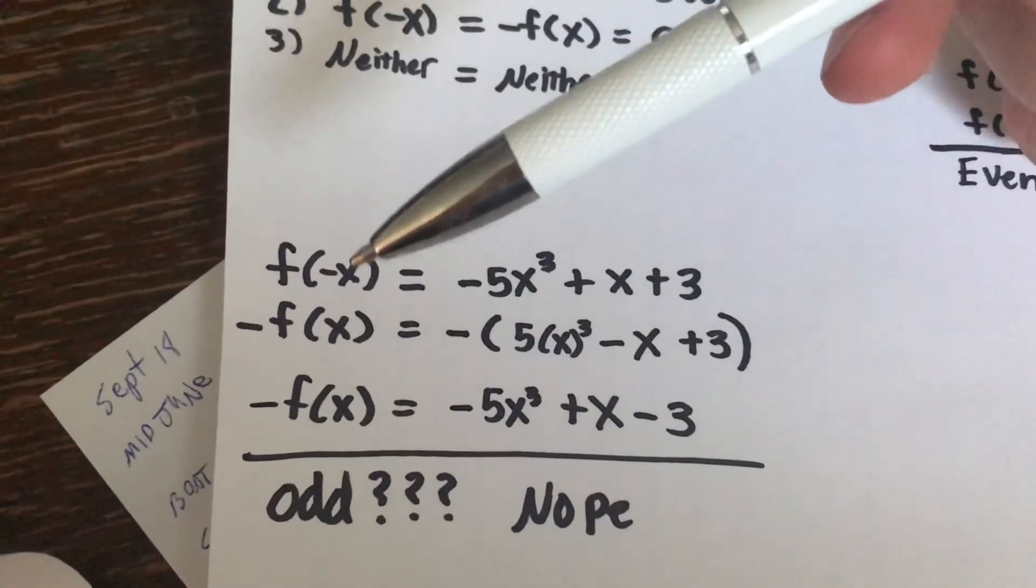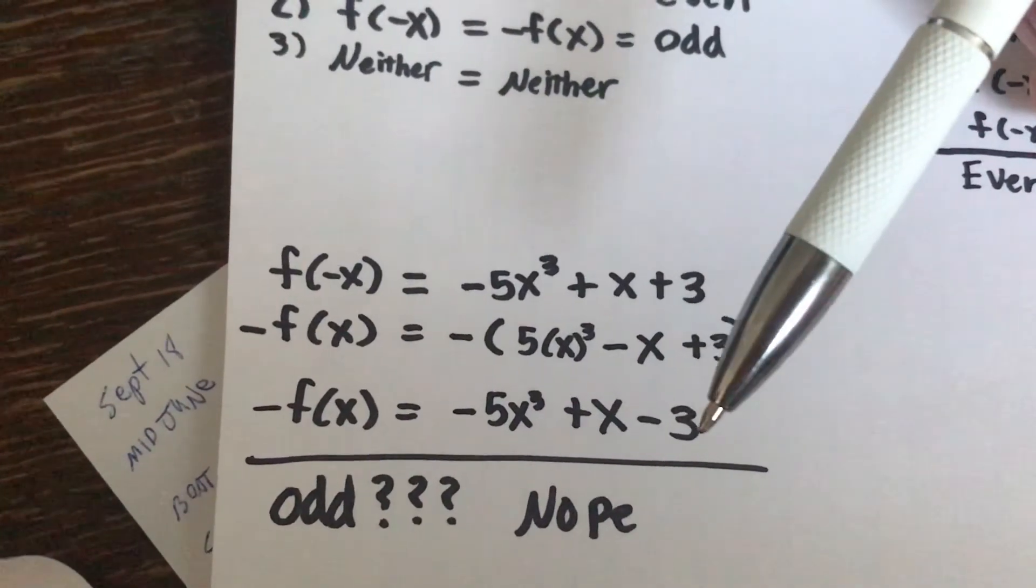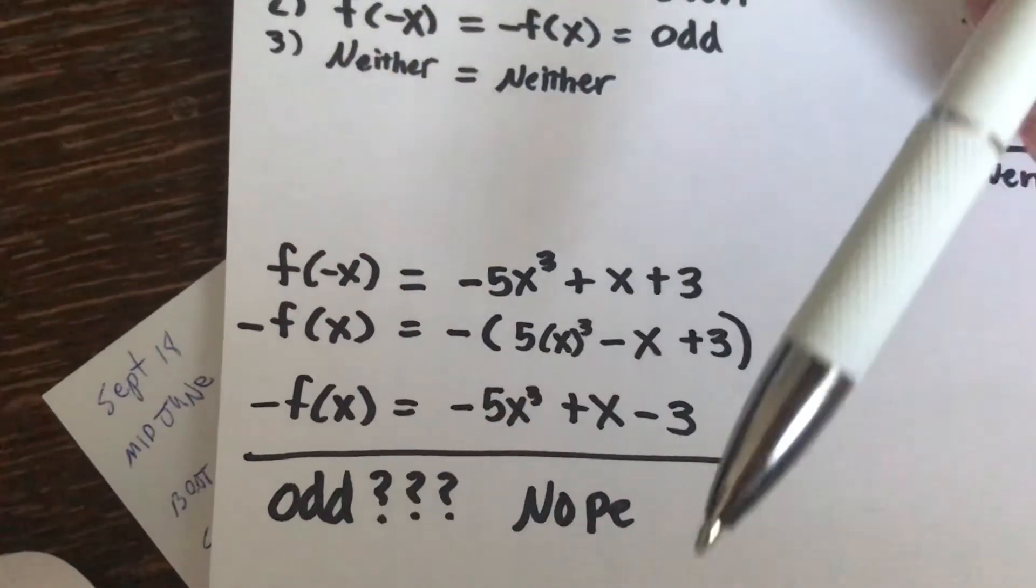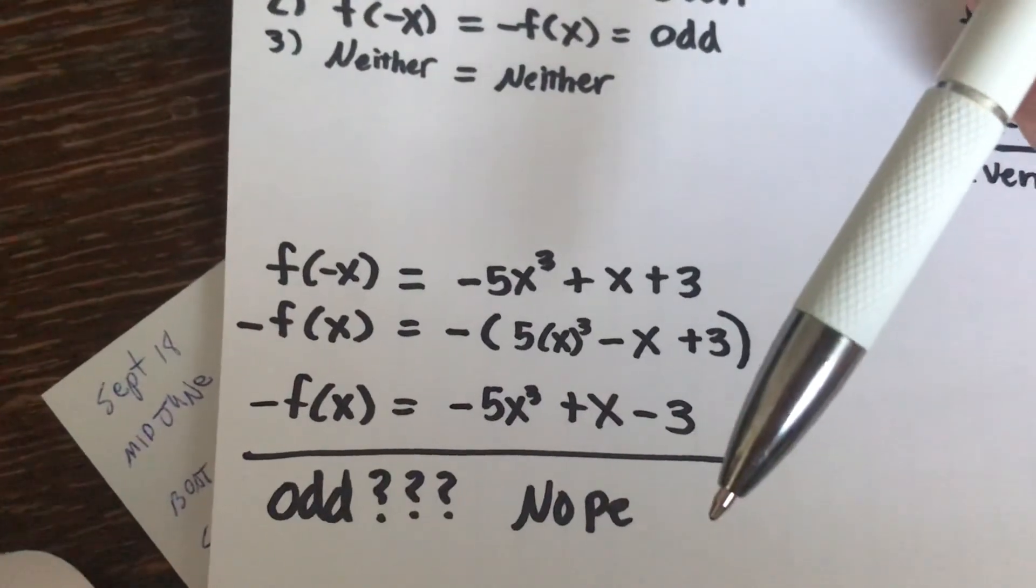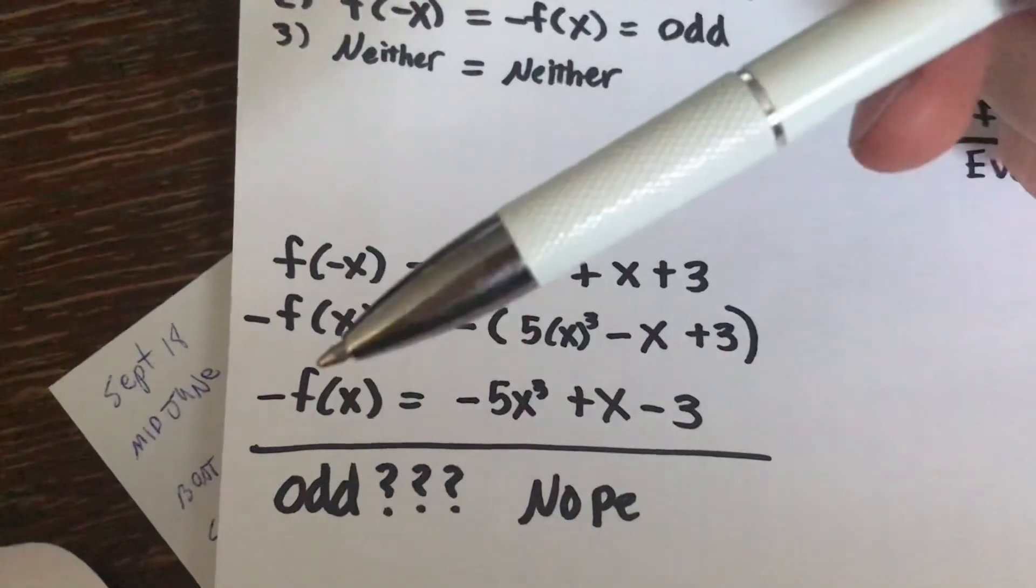And so even though it's really similar for our f of negative x to our negative f of x equation, it's still different with that negative 3 there. And so we know that it's not odd because it did not match our two equations of f of negative x and negative f of x.